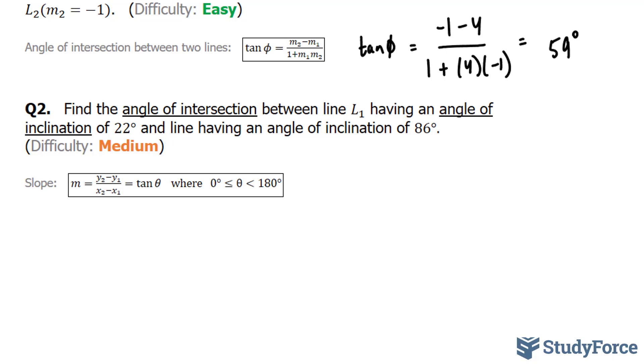The reason why this is medium level difficulty is because we need to convert these two angles of inclination using this relationship, and then once we find our m's, we can go back and use this relationship that we used in question one.